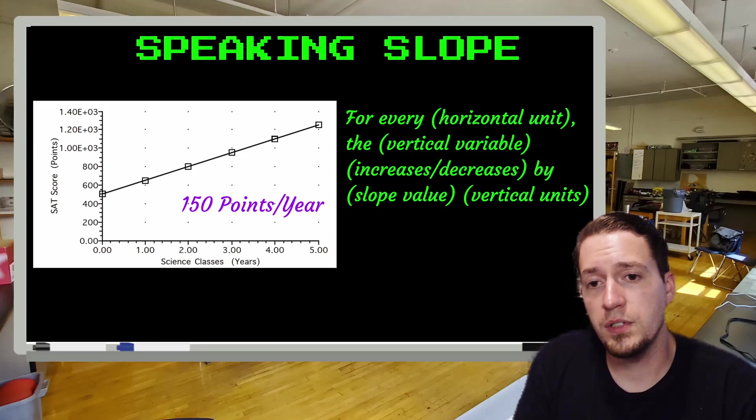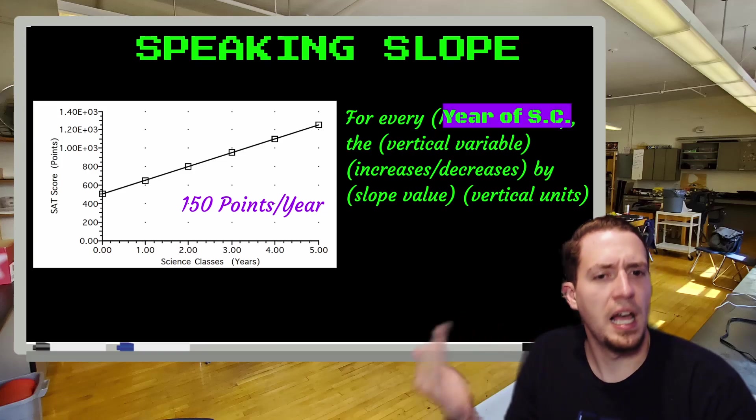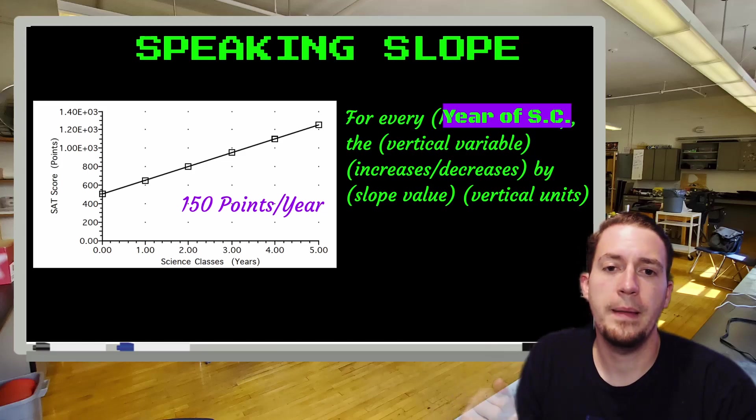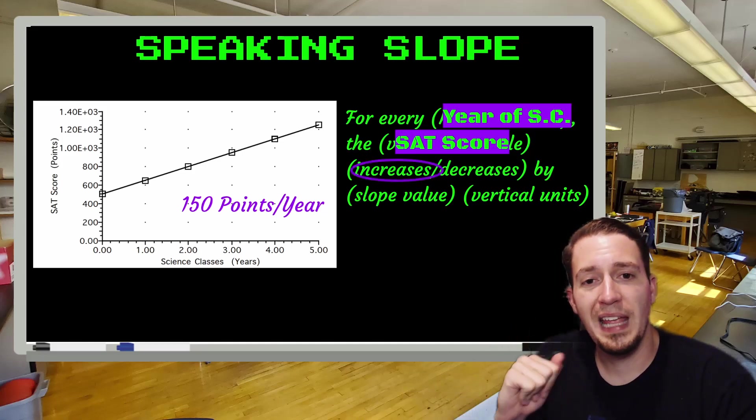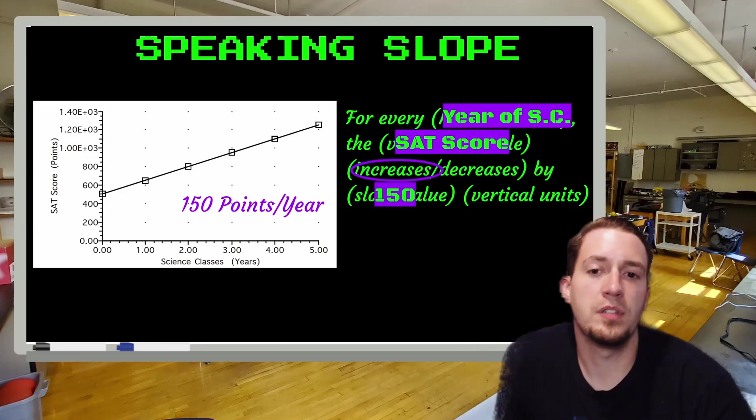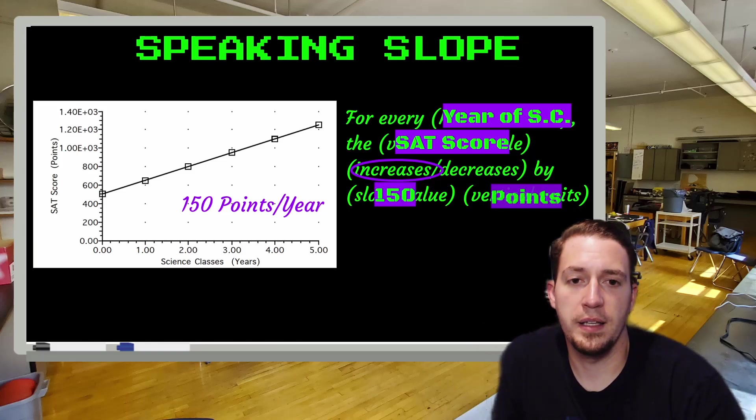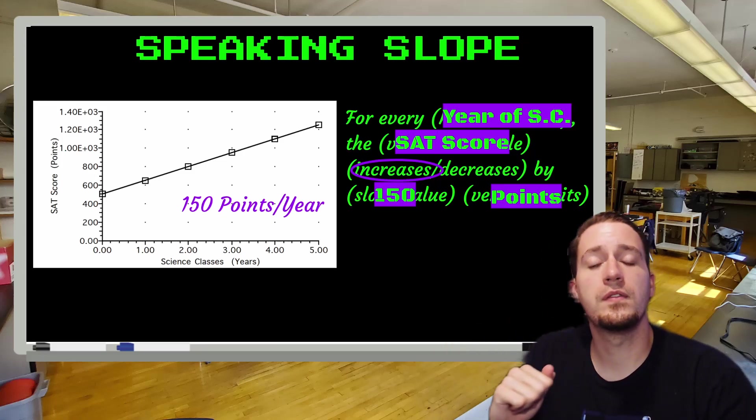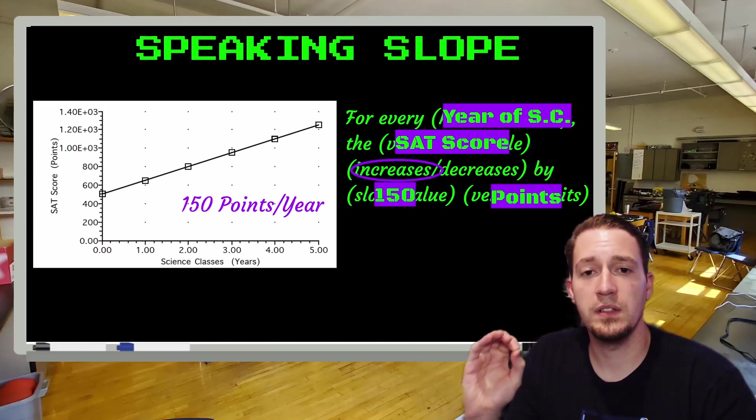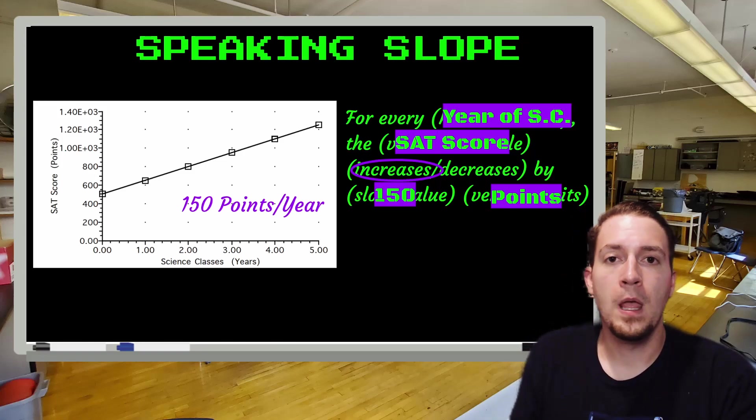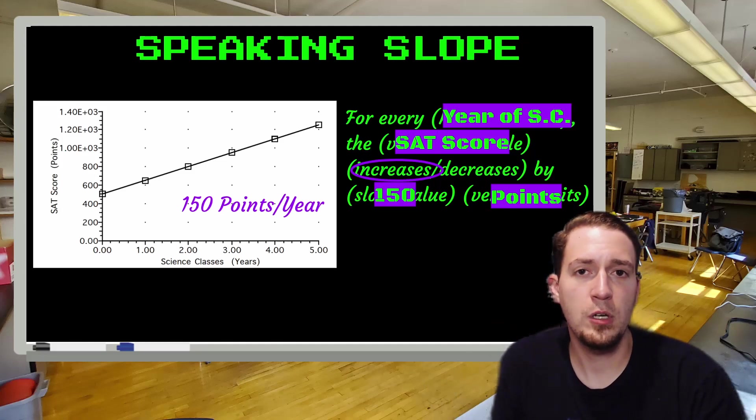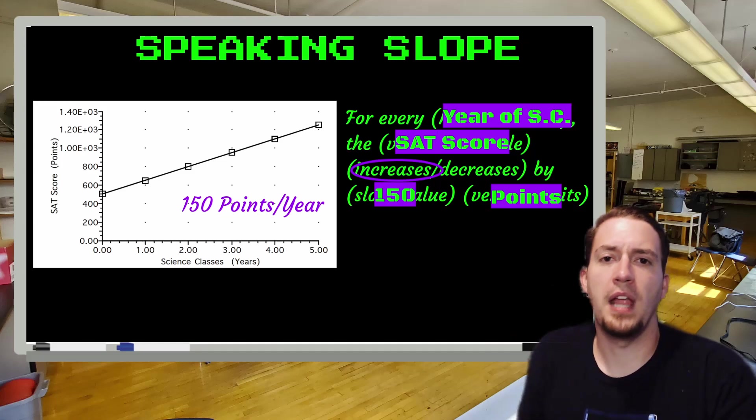All right, what does that even mean? So everything that's in parentheses, that's what's going to be swapped in and out, and the increase and decrease that's going to be chosen based off of whether or not the slope is positive, or whether or not the slope is actually negative. So let's go back to our graph that we just had. And let's try to fill this in. So for every horizontal unit, horizontal unit here looks like it to be years of science classes, I'm going to make that specific. So I know exactly what we're talking about. The vertical variable, which we know here is SAT score, because it's a positive slope value, we're going to go with increases by slope value, which is 150. And then the vertical units, which is finally points. So now if I read this for every year of science classes, the SAT score increases by 150 points. That's a sentence that most people could understand and is a heck of a lot better for communication instead of 150 points per year. We do the same thing with every time we encounter slope to have an actual meaning and an actual understanding of it.